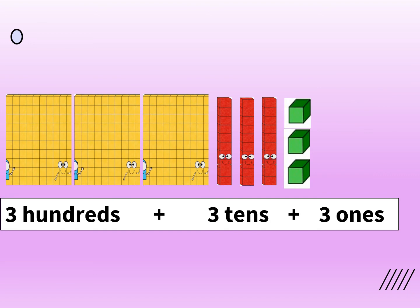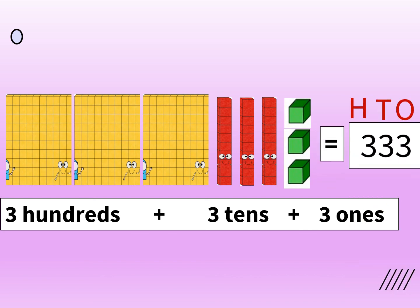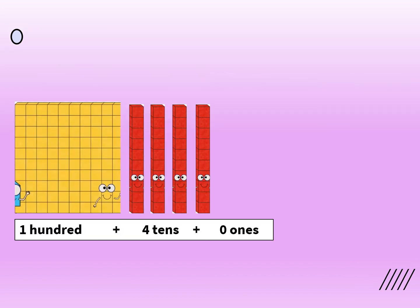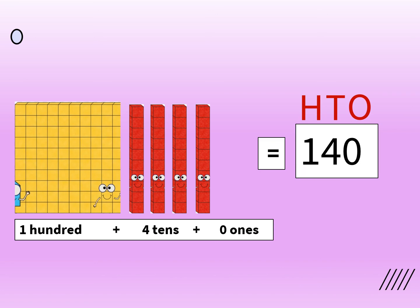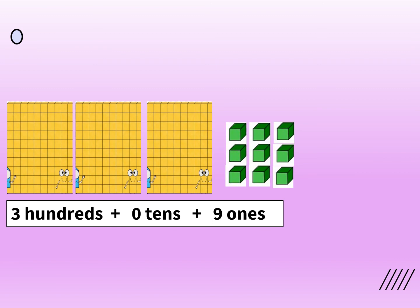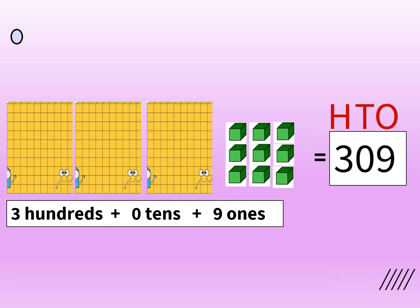Here we have 3 grids of 100, 3 bars of 10s and 3 blocks of 1s. That means 3 hundreds plus 3 tens plus 3 ones is equal to 333. Here we have 1 grid of 100 and 4 bars of 10s and 0 ones. So we write 1 at the hundreds place, 4 at the tens place and 0 at the ones place. This makes the number 140. Here we have 3 hundreds, 0 tens and 9 ones. So 3 hundreds, 0 tens and 9 ones make the number 309.